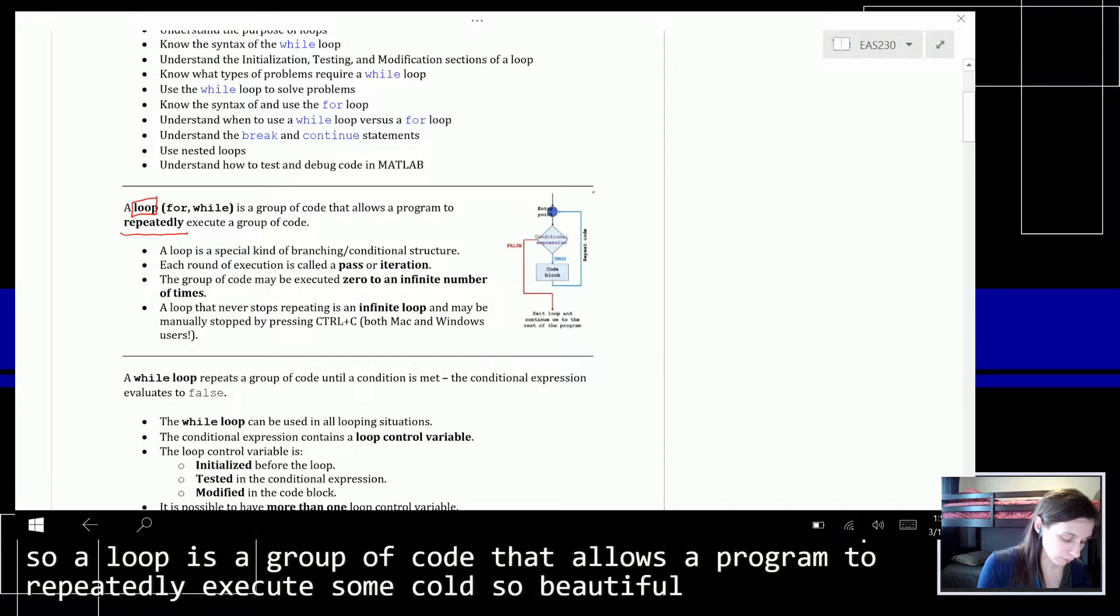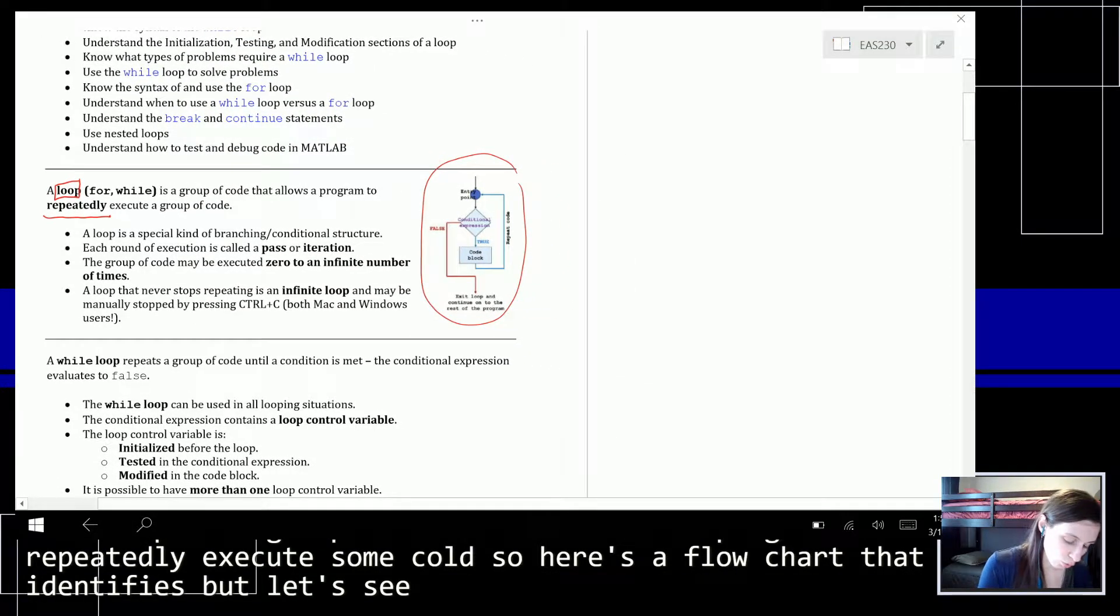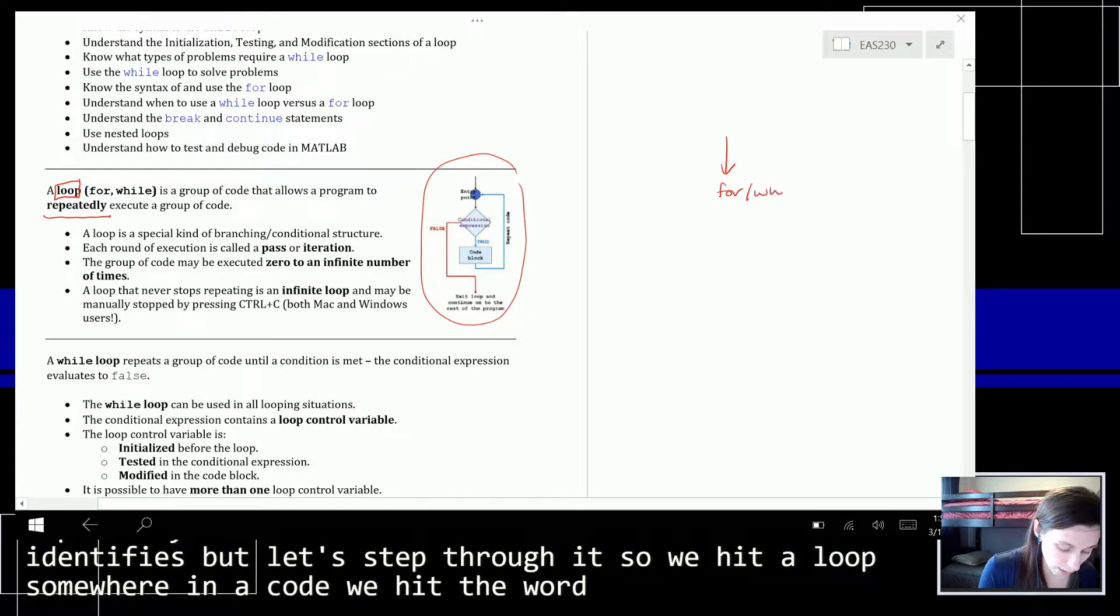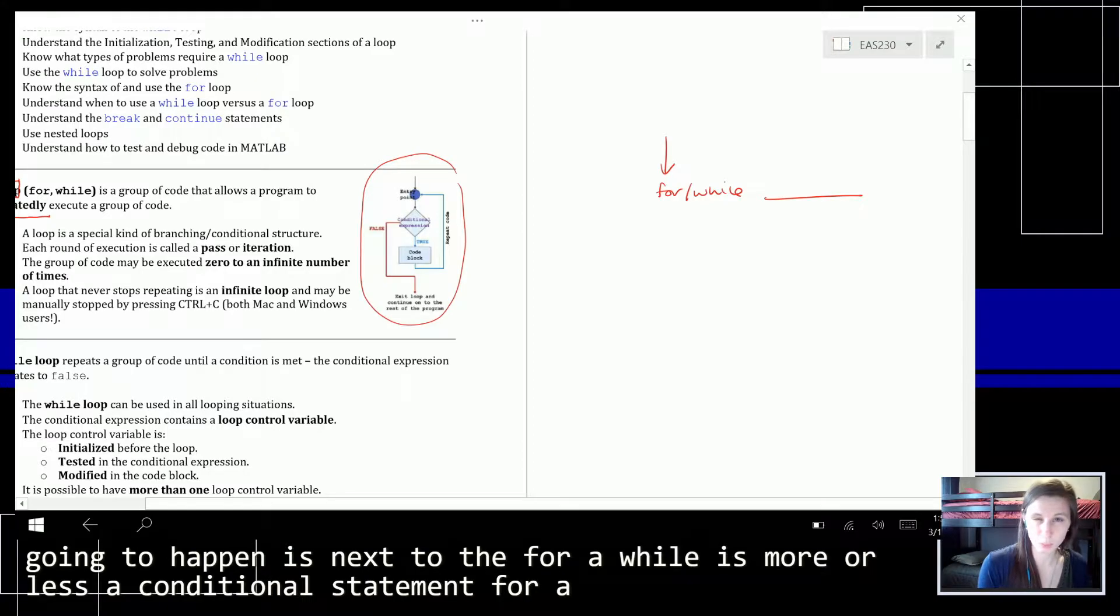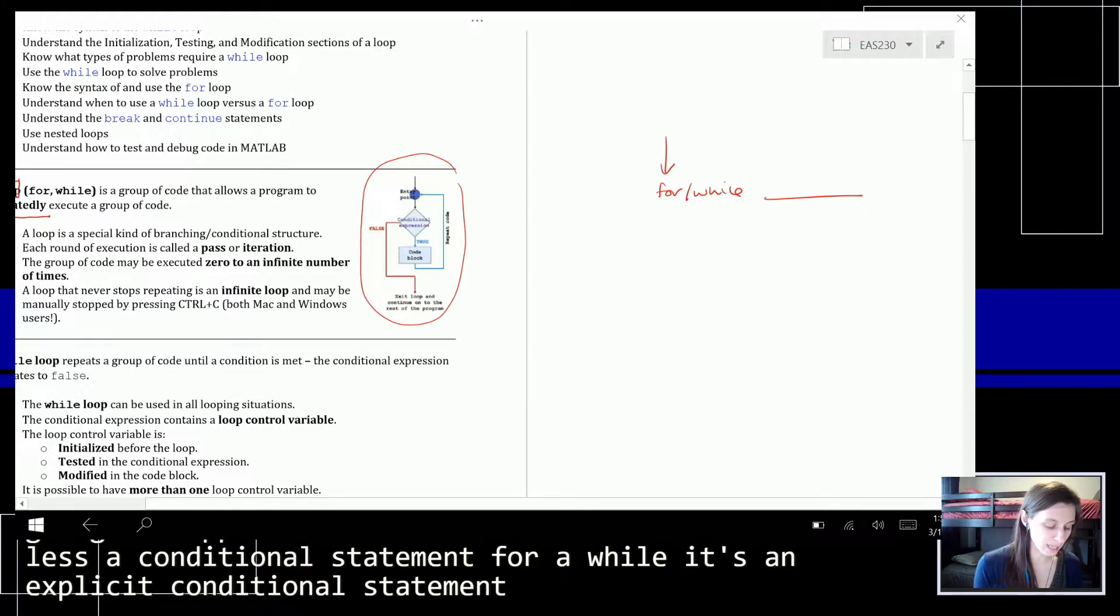So here's a flowchart that identifies, but let's step through it. So we hit a loop somewhere in our code, we hit the word for or while. What's going to happen is next to the for or while is more or less a conditional statement. For a while, it's an explicit conditional statement. For a for loop, it's implicit.